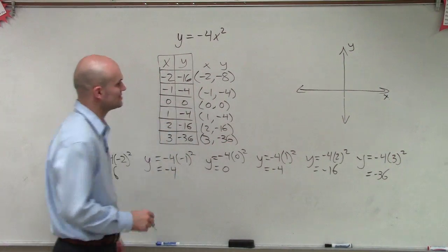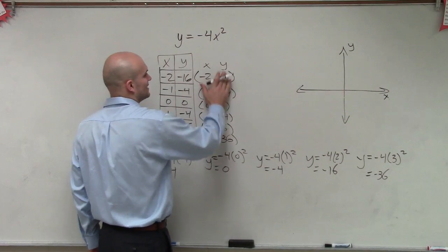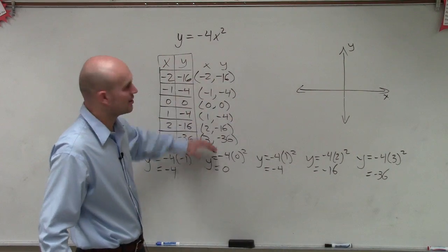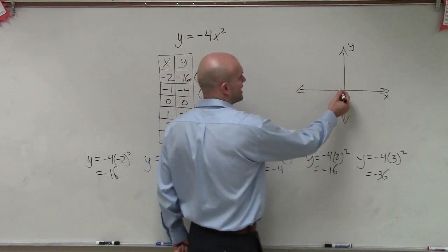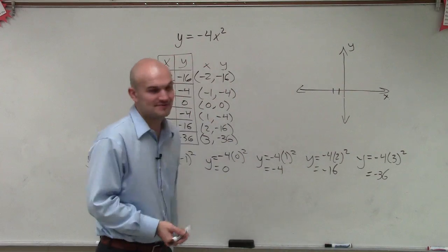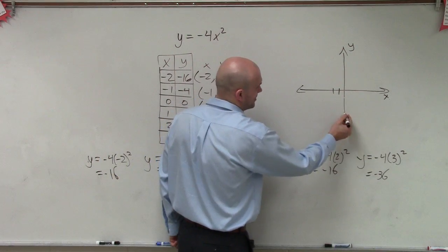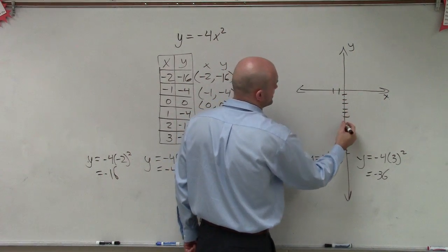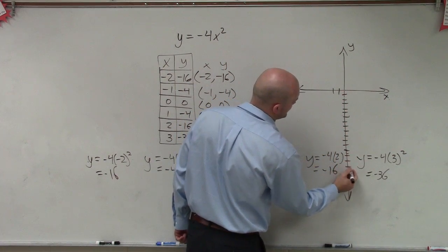All right. So let's just plot our points here. This is negative 16 now. So I go over negative 2. So I'm plotting all the x-coordinates and then the y-coordinates. So I go over negative 2 and then down negative 16. So I'm going to have to increase this a little bit. Down 1, 2, 3, 4, 5, 6, 7, 8, 9, 10, 11, 12, 13, 14, 15, 16.